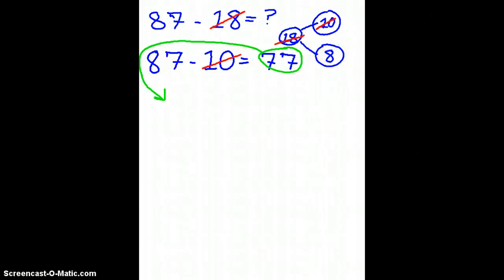So now I'm going to rewrite the difference I just got from subtracting 87 minus 10, which I just circled and brought around. That's where the green arrow is showing. And now I'm going to write 77 minus, and my last part for my number bond is 8. So I'm going to write 77 minus 8 equals, and this is probably the most challenging part.